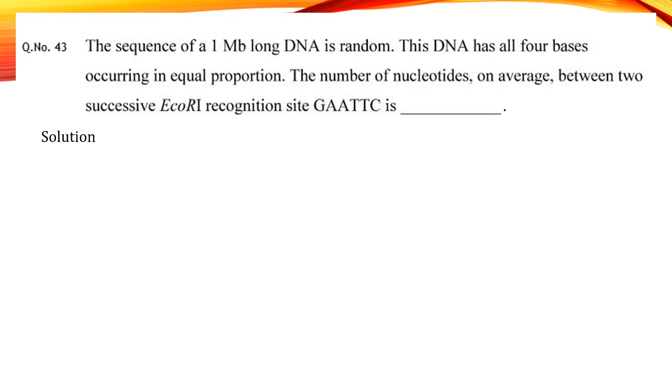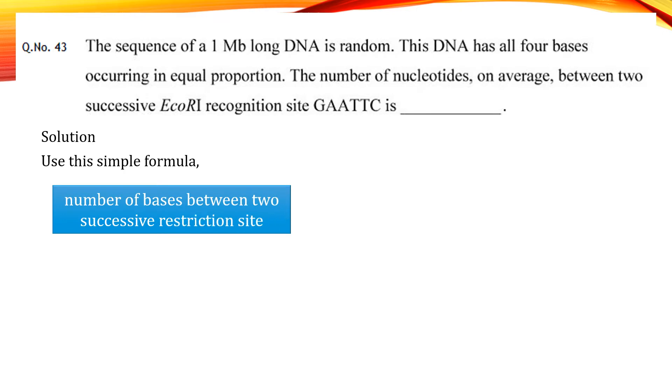We can calculate the number of bases between two successive restriction sites using this simple formula: 4 to the power of the number of base pairs in the recognition sequence. Here 4 represents the four types of bases that are A, T, G, and C.